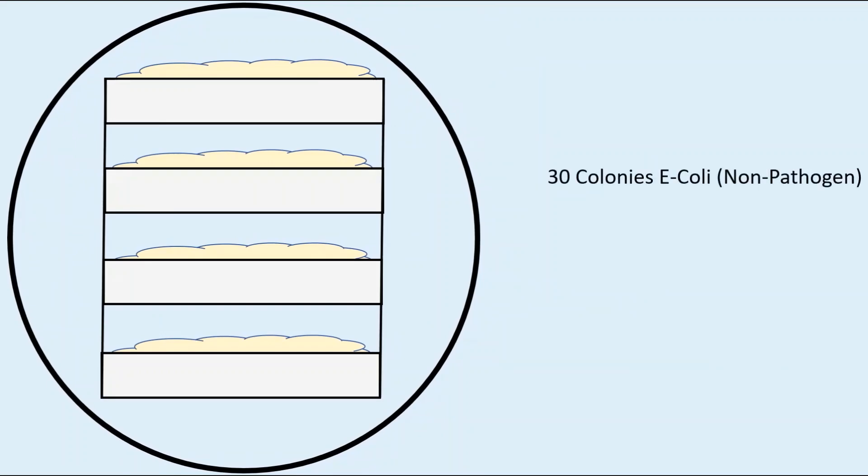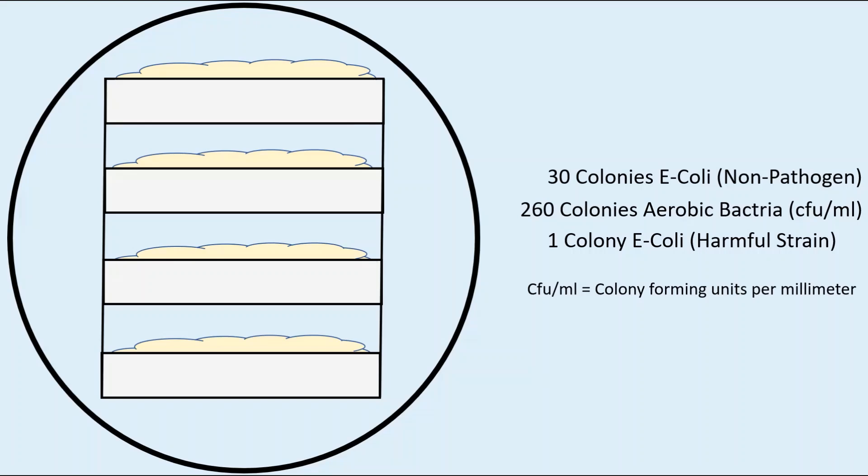30 colonies of E. coli and this is a non-pathogen E. coli not all E. coli is bad. 260 colonies of aerobic bacteria, primarily bacteria related to food spoilage were collected. One colony of harmful E. coli were found. These samples were from colony forming units per one millimeter.